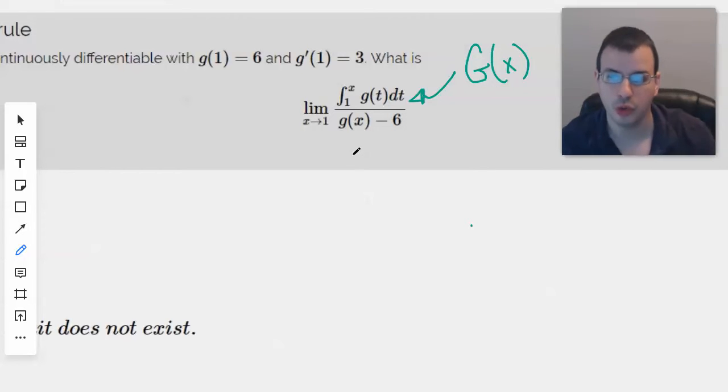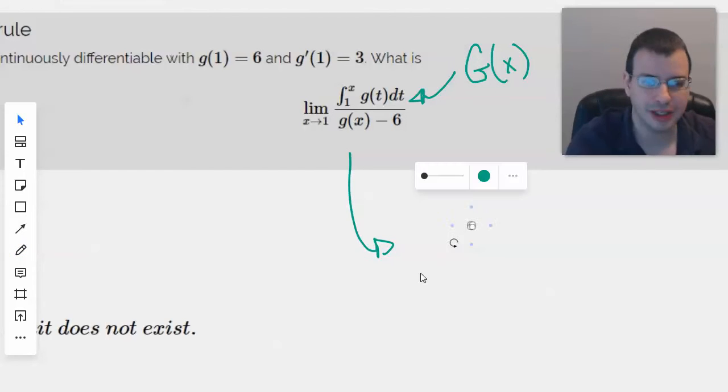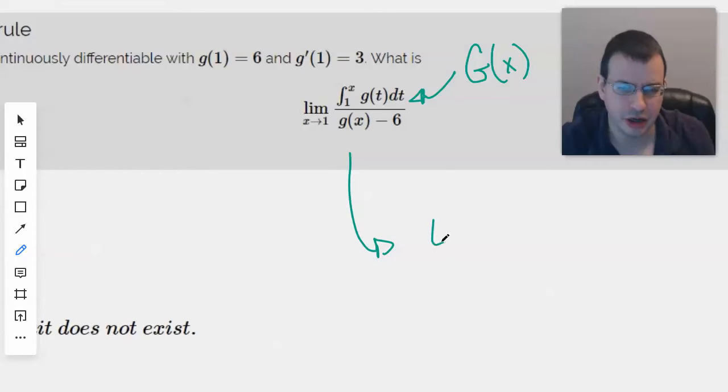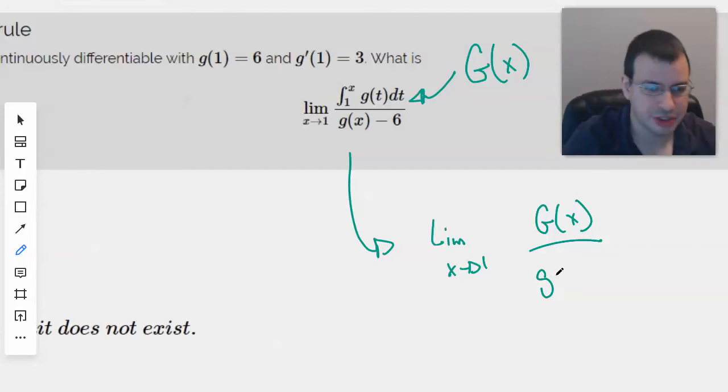So rewriting this in a more comprehensible, simpler form, we get something along the lines of limit as x approaches 1 of G of x over g of x. That's a terrible g, it looks like an s. I would never think that you could write a g so that it looks like an s.